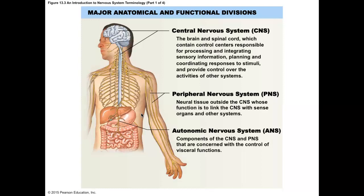The somatic nervous system — soma means body — is the voluntary part. What can you voluntarily control? If you really think about it, the only physical thing you can control is your skeletal muscles. There's nothing else you physically can control; you can control your thoughts, but that's not a physical aspect of your body. So when you talk about the somatic nervous system, you're talking about skeletal muscle.